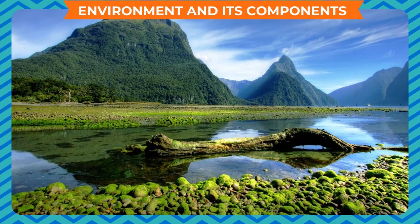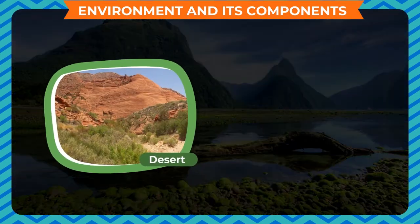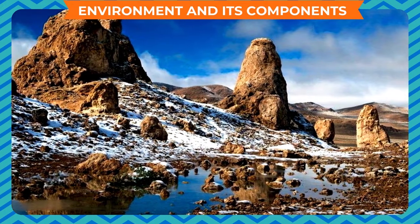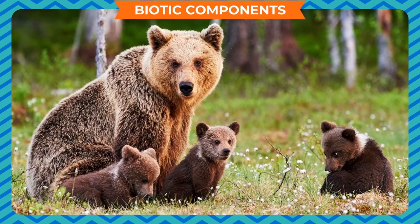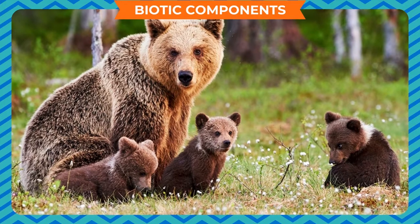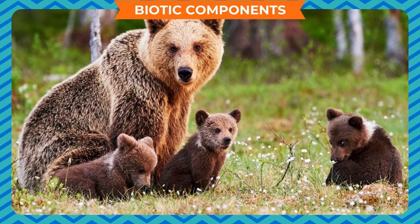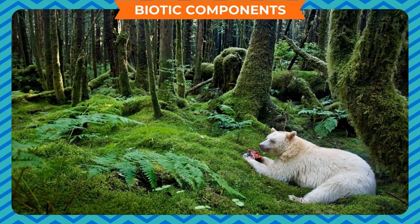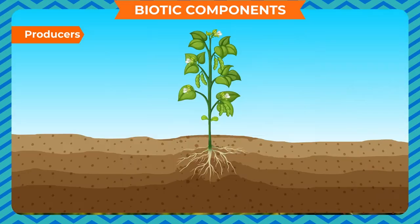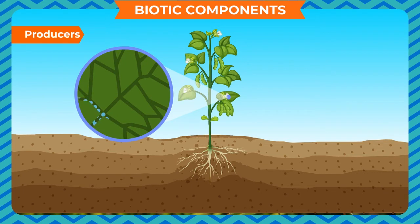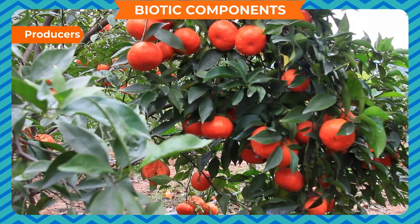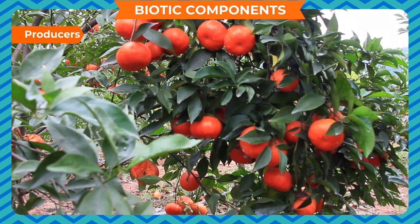If you study the environment in different areas, such as desert, hilly or coastal areas, you will find that they differ from each other but their basic components are the same. The living organisms that make up the biotic component can be divided into three groups depending on how they obtain their food. Plants make their own food from carbon dioxide and water using the energy of sunlight — a process called photosynthesis. Organisms that make their own food are called autotrophs or producers.